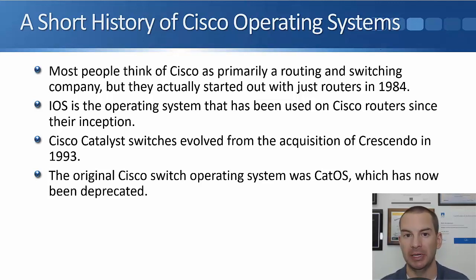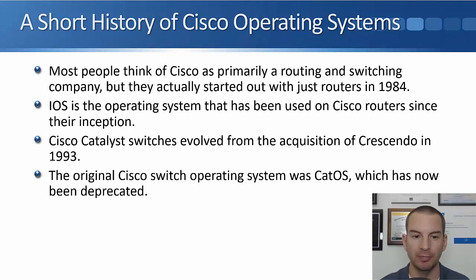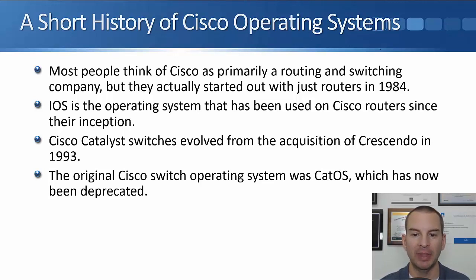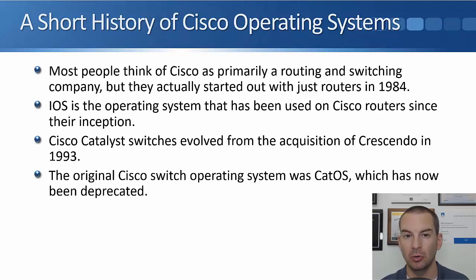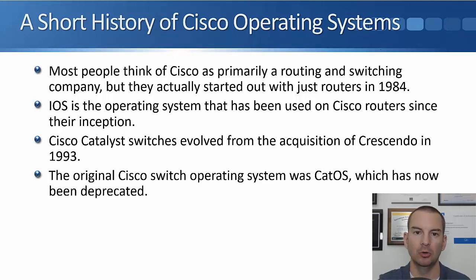Cisco was originally a routing company. To offer switches, they made an acquisition — they bought Crescendo in 1993, and the Catalyst switch product line came about because of that acquisition. The original operating system on the Catalyst switches was CatOS, but that's been deprecated for quite a long time now.